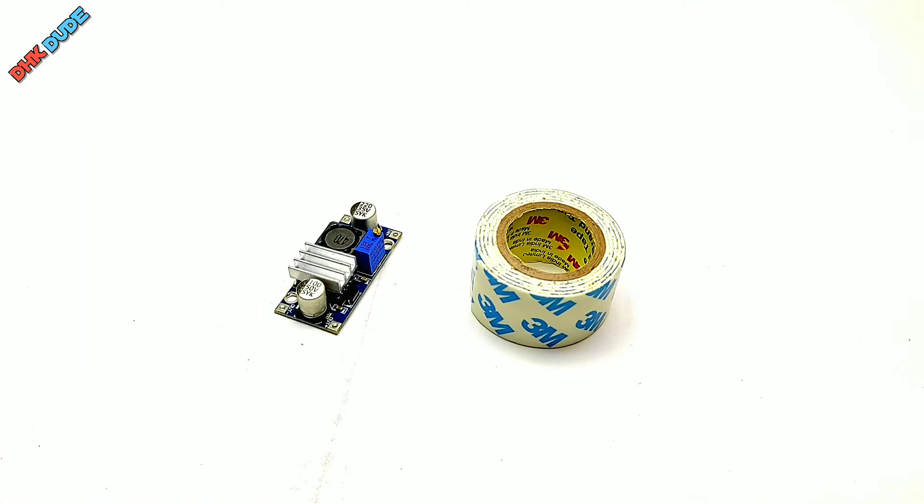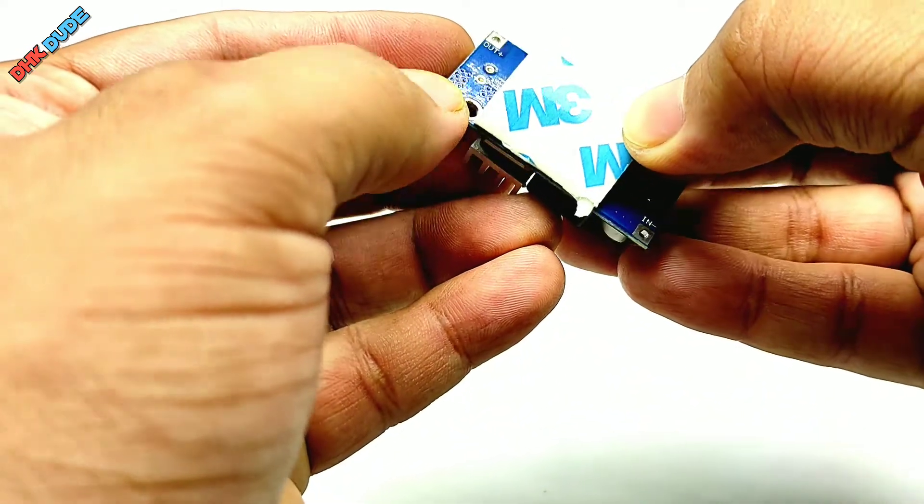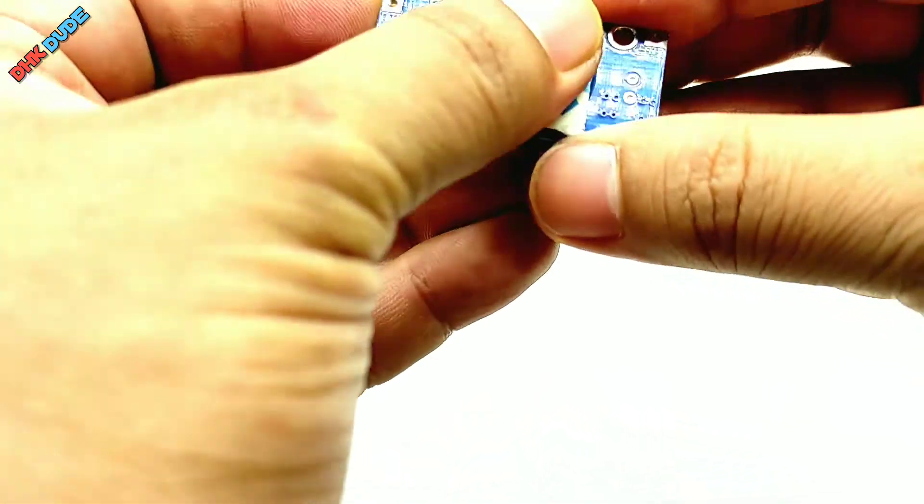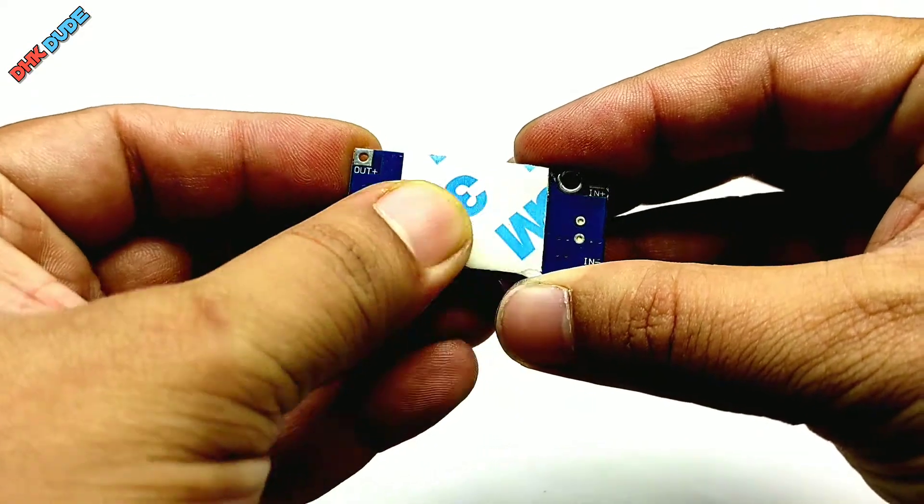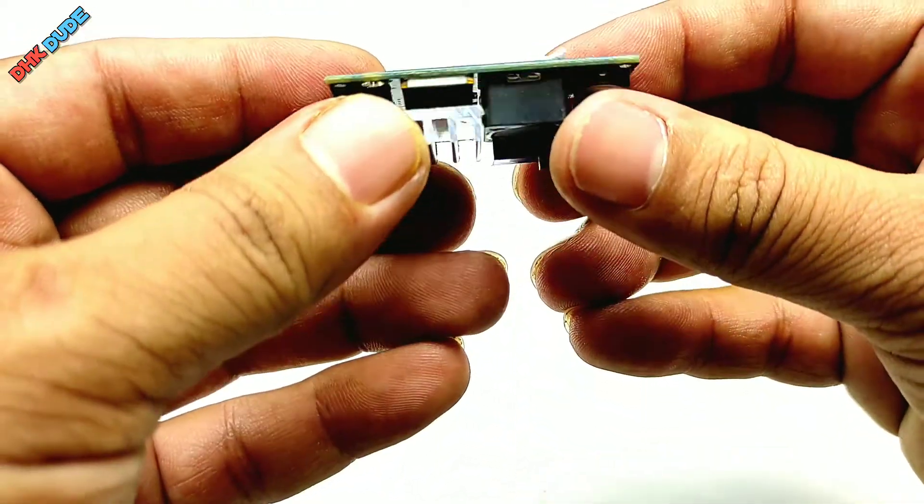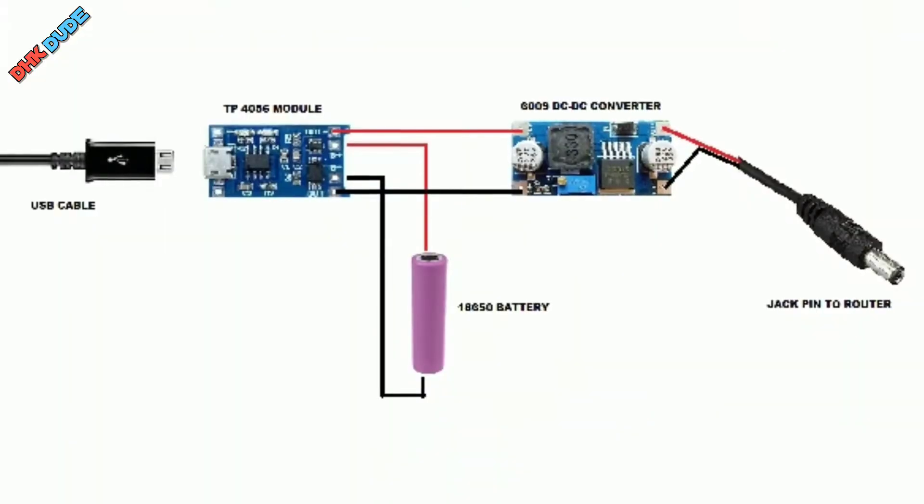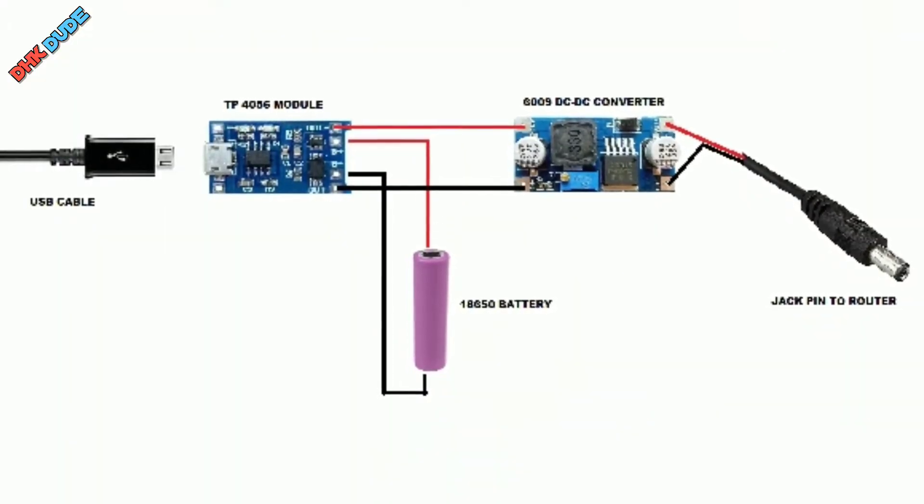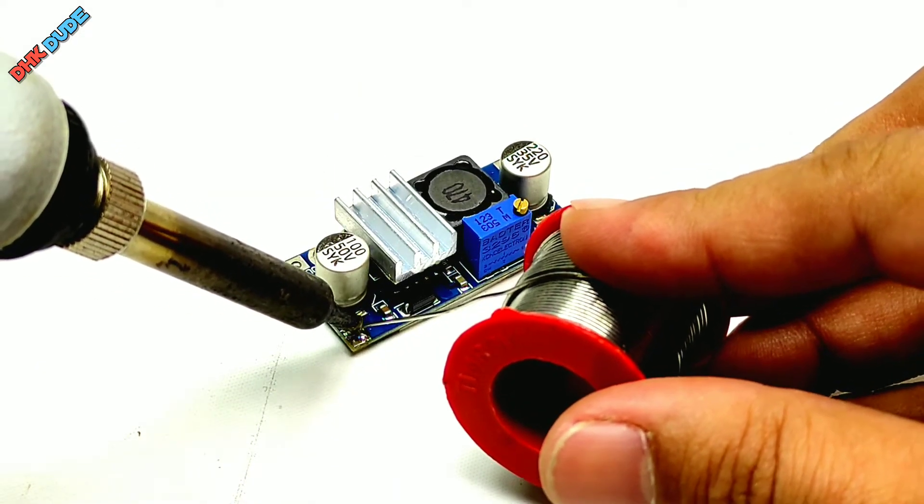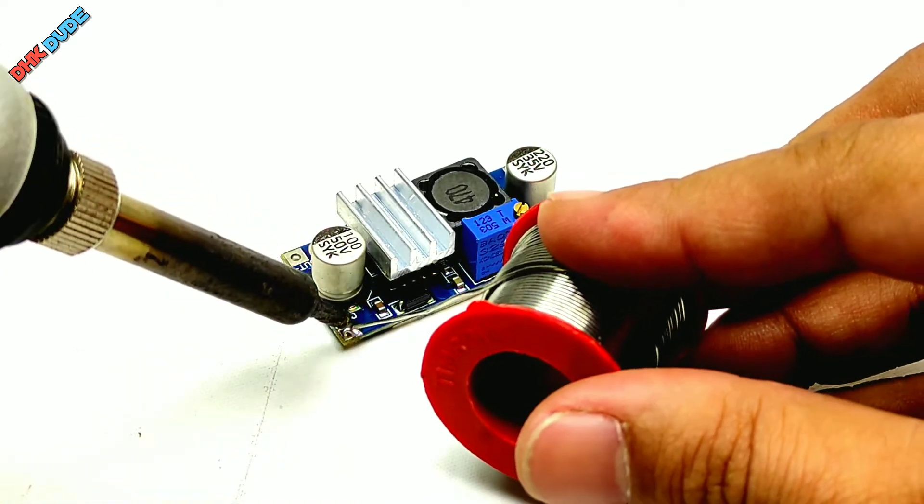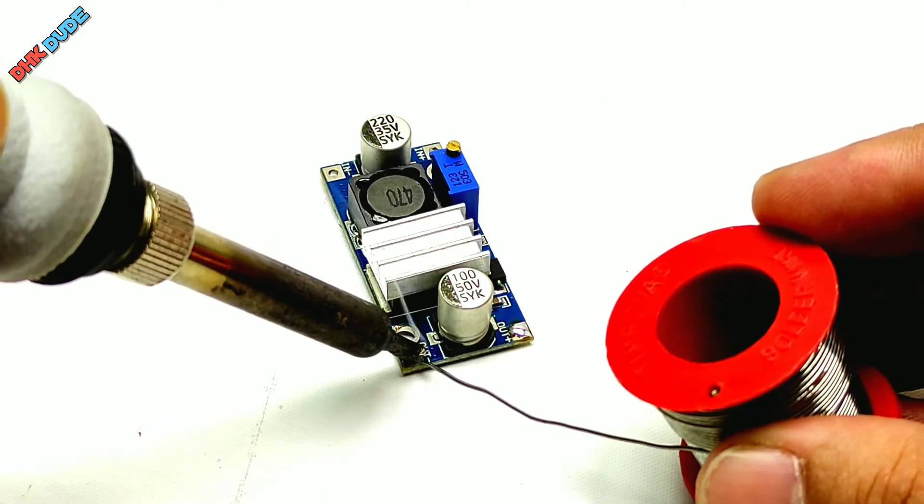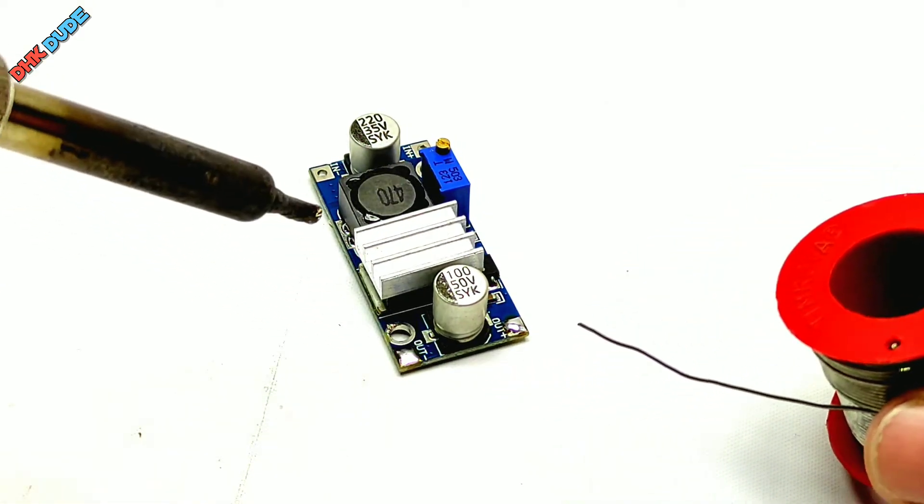Take double side tape and stick it to the back side of the module. We will stick the module in the UPS case using double side tape. Refer the circuit diagram to make connections.